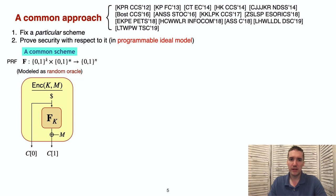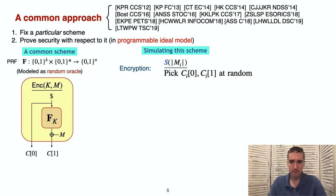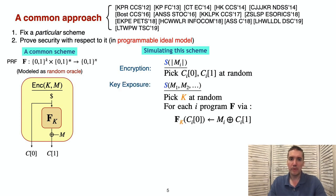First, we pick a PRF that will be modeled as a random oracle. To encrypt a message M with key K, we pick a random value, feed this value through F sub K, and then XOR the result with the message. To simulate encryption by this scheme, we can simply pick the ciphertexts at random. When we need to expose a key, we pick one at random and reprogram the random oracle to be consistent with our earlier encryptions.